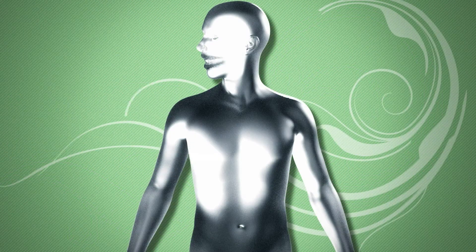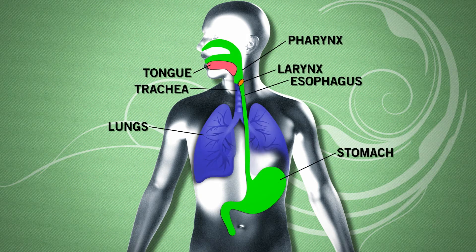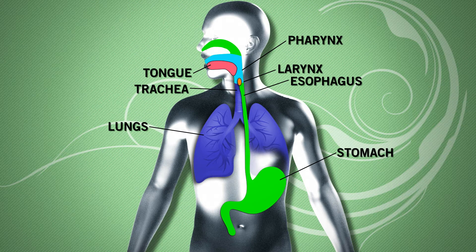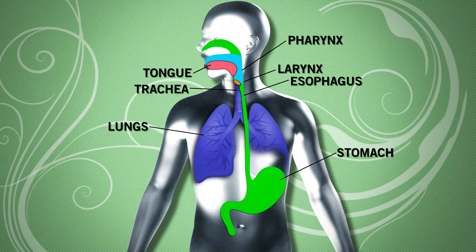Swallowing is a complex process, using nerves and muscles to move food from the mouth to the stomach. After chewing, the prepared food is collected by the tongue, making it ready for swallowing. During this stage, the larynx closes tightly, and breathing stops to prevent food and liquid from entering the lungs. Food or liquid then enters the esophagus, which carries it to the stomach.